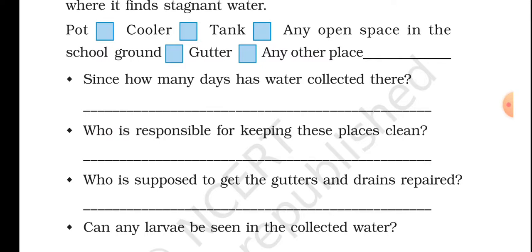Any other place where stagnant water has been collected, or tiny little ponds have formed where stagnant water collects — such places are where mosquitoes lay eggs and where we find mosquitoes too.